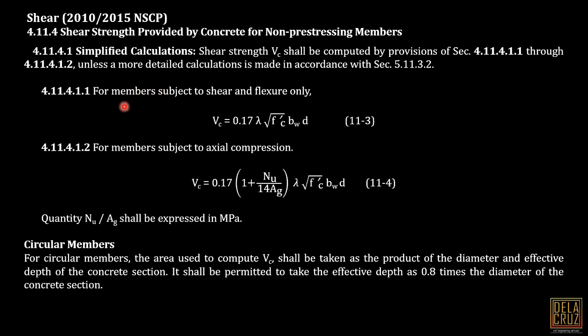The simplified calculation is a more conservative design and it is commonly used in the board exam. This is the first section for members subject to shear and flexure only. We have this formula. Then, for members subject to axial compression, observe - we just add a factor here but the same formula. Then, NU over AG shall be expressed in MPa. That NU is the normal or the actual compression.